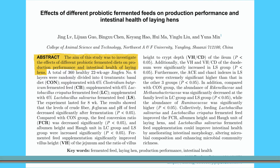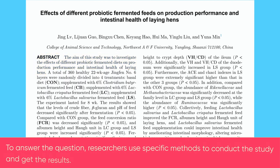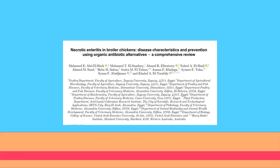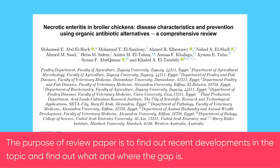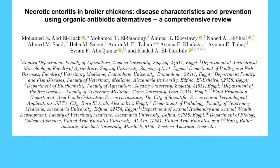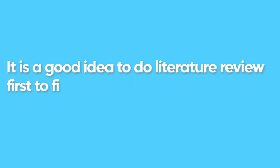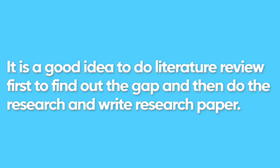To answer the research question, researchers use specific methods to conduct the study and get the results. Whereas the purpose of a review paper is to find out recent developments in a topic and find out what and where the gap is. Therefore, it is a good idea to do a literature review first to find out the gap, and then do the research and write a research paper. So in general, the flow of research will be something like this.